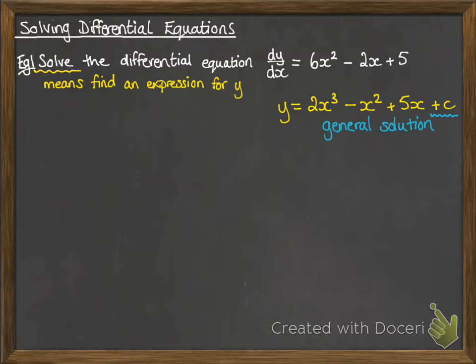Basically, you might be given some particulars to work out at a certain point, and then you'd be able to give a particular solution. But this one here is just the general solution.